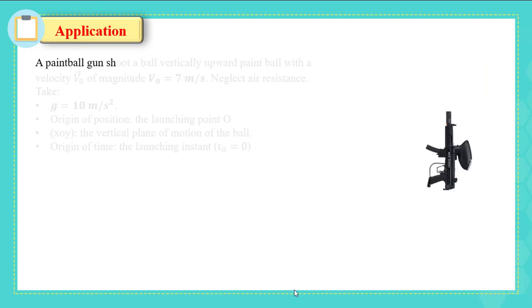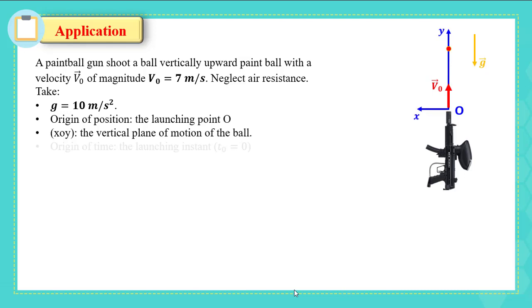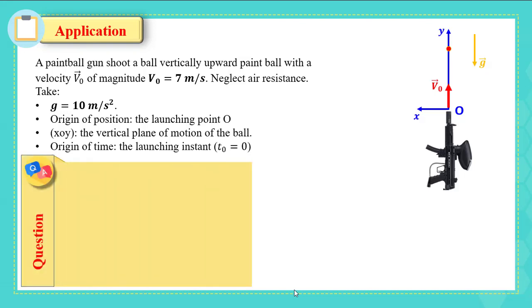Application: a paintball gun shoots a ball vertically upward with initial velocity magnitude v₀ = 7 m/s. Neglect air resistance, take g = 10 m/s². The origin of position is the launching point, the x-o-y plane is the vertical plane of motion, and the origin of time is the launching instant where t₀ = 0. Pause the video after each question and think of the answers. Question 1: justify why the ball is in free fall.